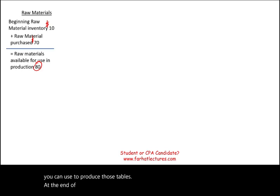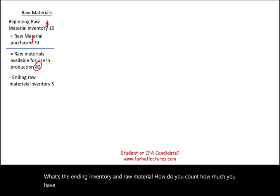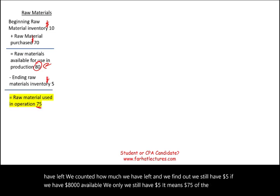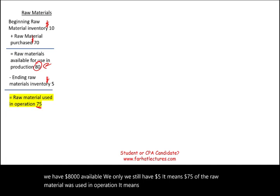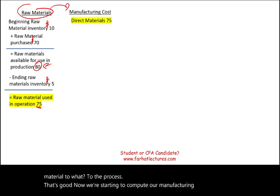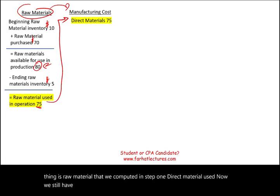At the end of the period you deduct how much wood is left over — the ending inventory in raw material. You count what's remaining; we find we still have $5. If we had $80 available and $5 remains, it means $75 of raw material was used in operation — transferred from raw material to the process. Now we have direct material used computed in step one, and we still have $5 unused in inventory, but we track what was used and what was unused.